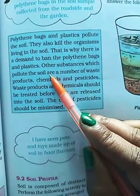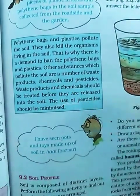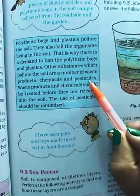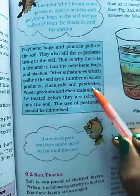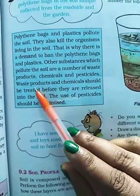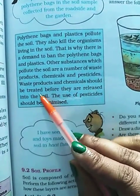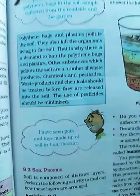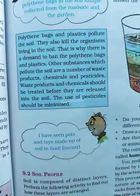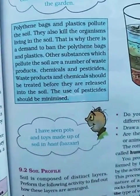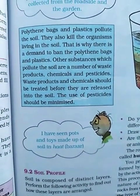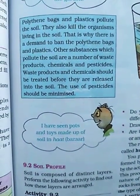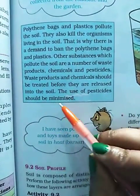That is why there is a demand to ban polythene bags and plastics. Other substances which pollute the soil include waste products coming out from factories and from our houses, as well as chemicals and pesticides. Pesticides are the liquids used to kill pests. Waste products and chemicals should be treated before they are released into the soil — they should be sent to a treatment plant to make them less harmful. The use of pesticides should be minimized.